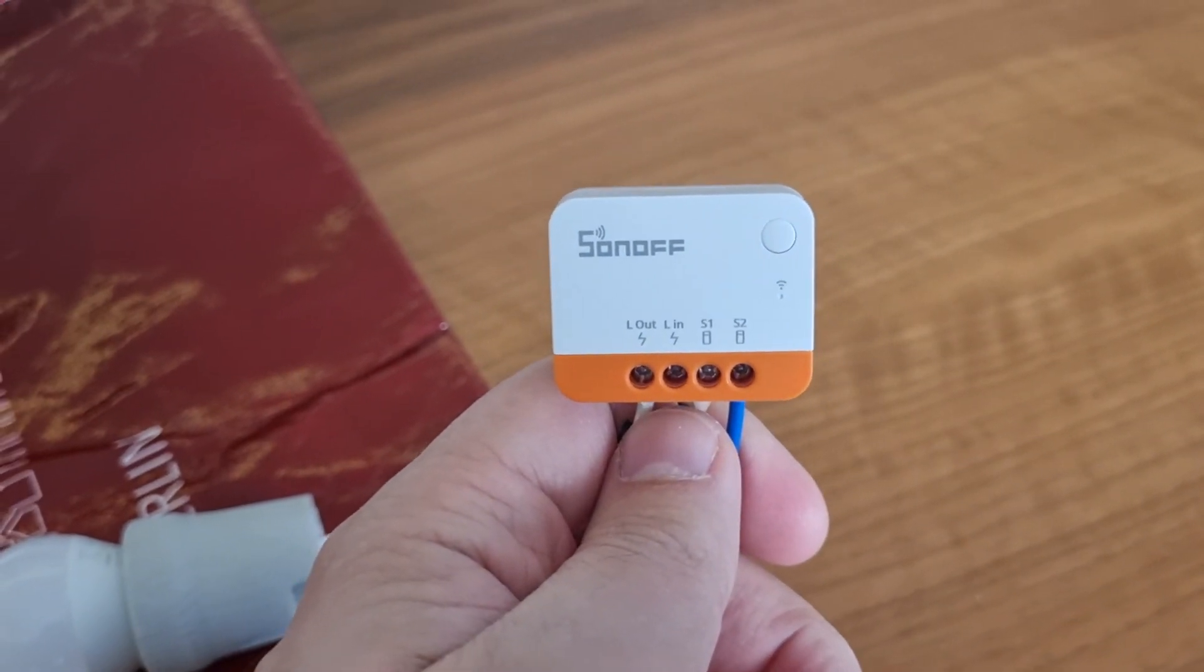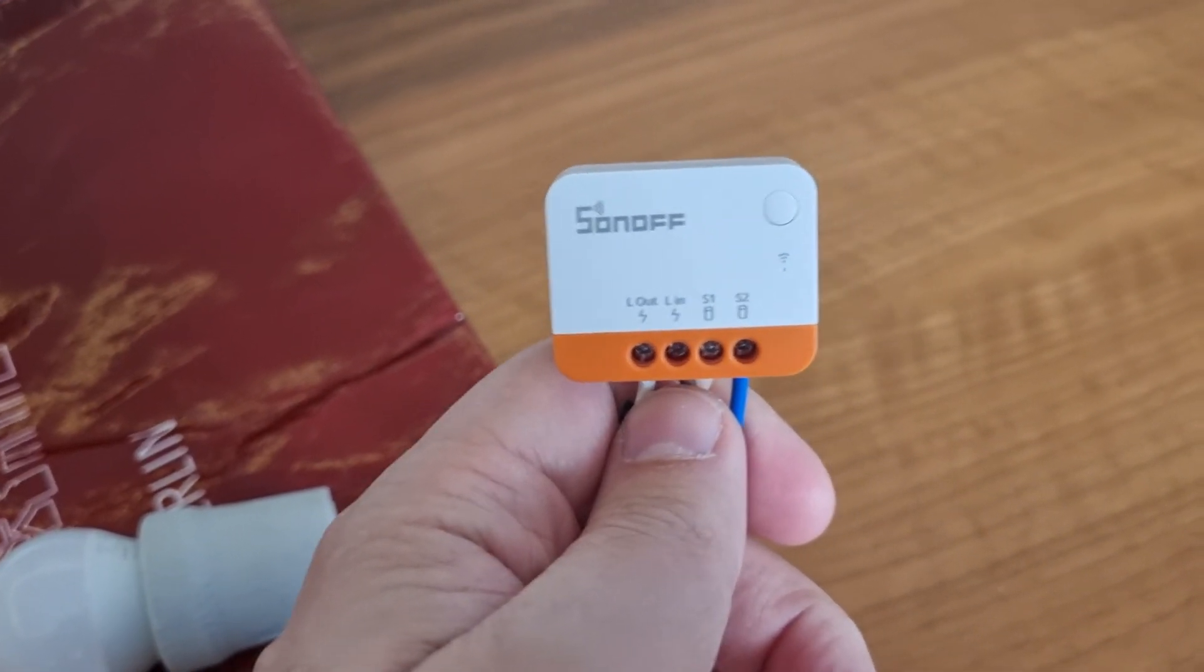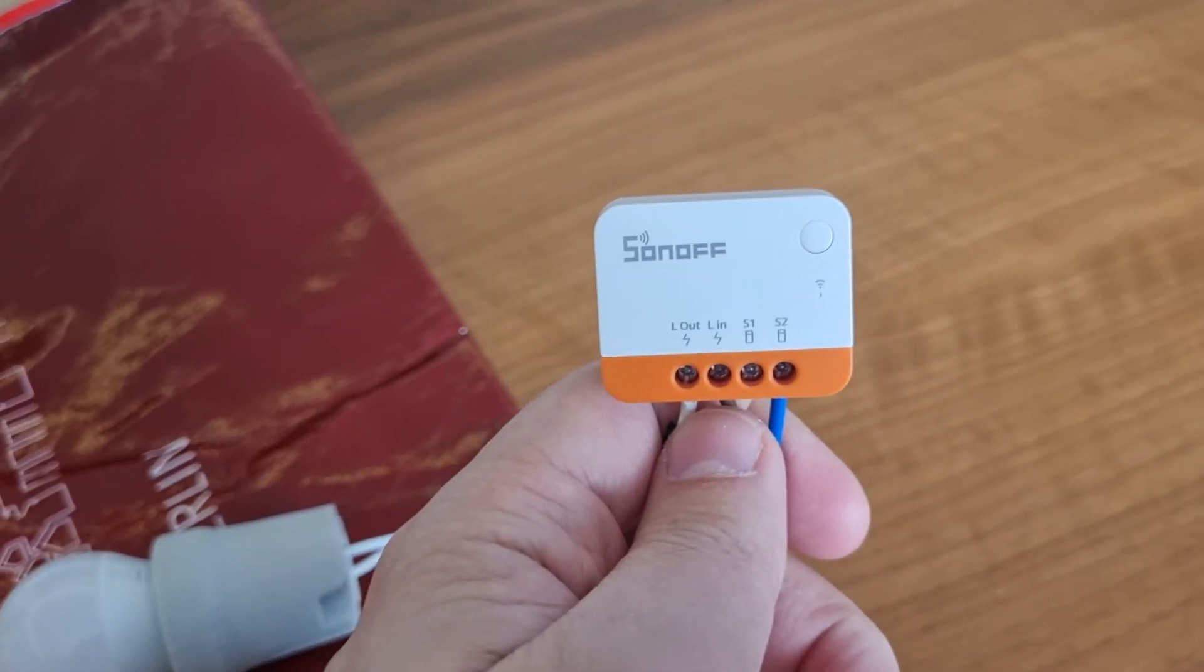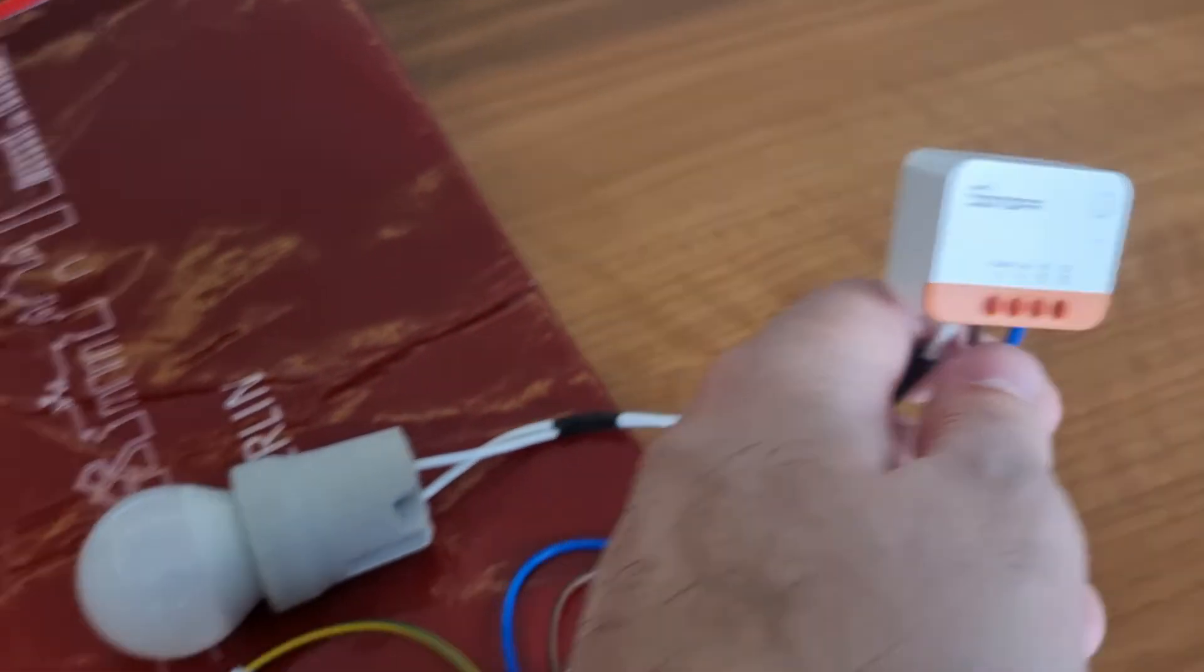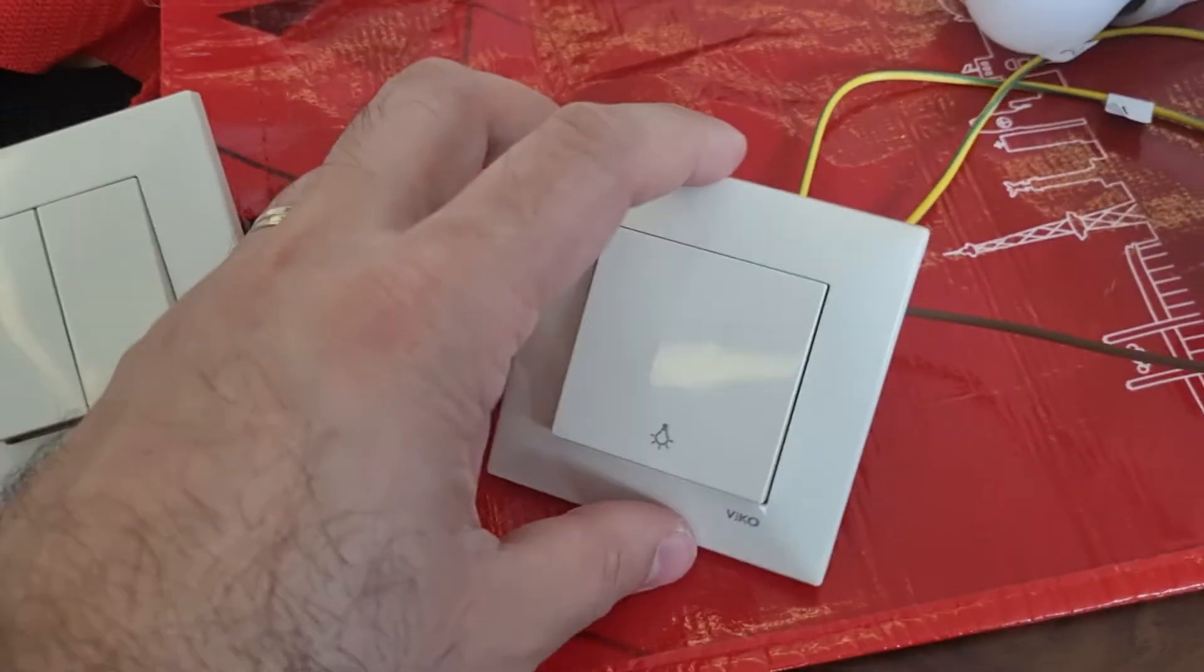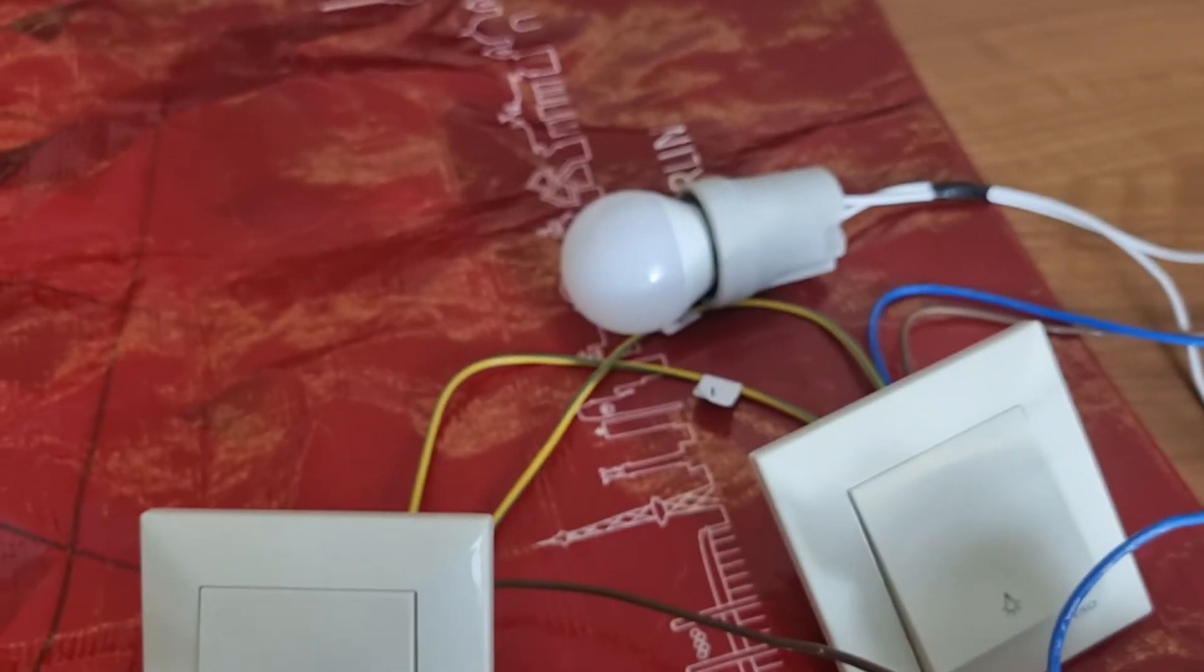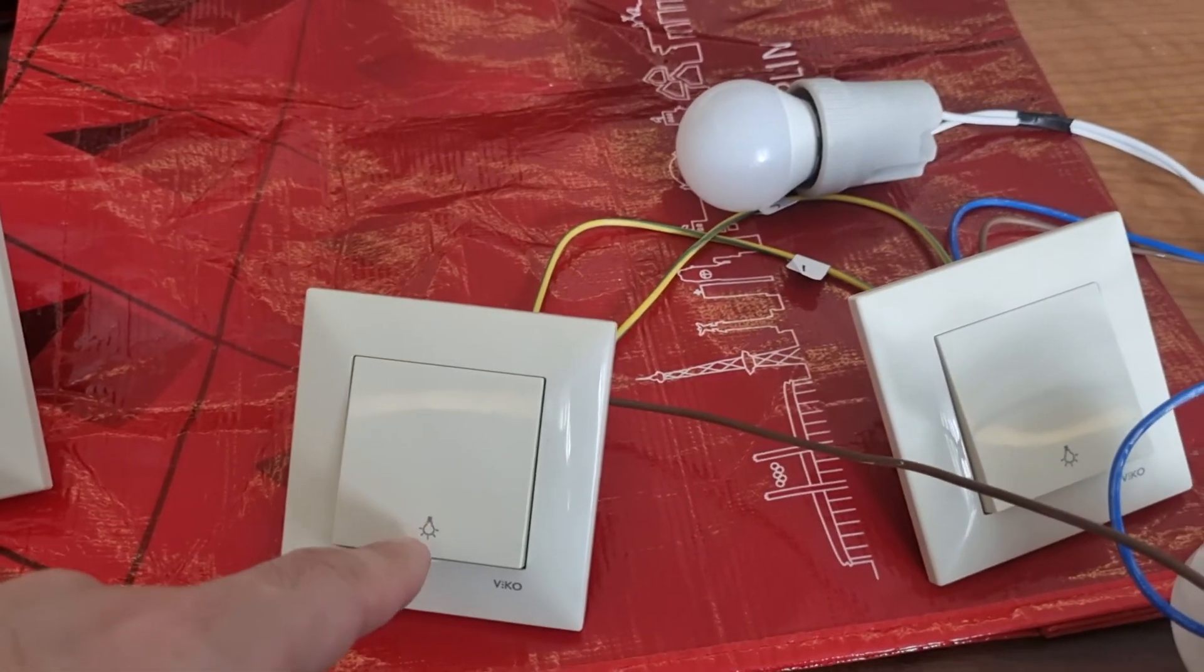Hi, today I want to share with you how I actually get the two-way system, or some people call it Valvian, to work with the Sonoff. Basically, what is a Valvian or two-way? It's when you have two switches—one switch and a second switch—which control the same light.